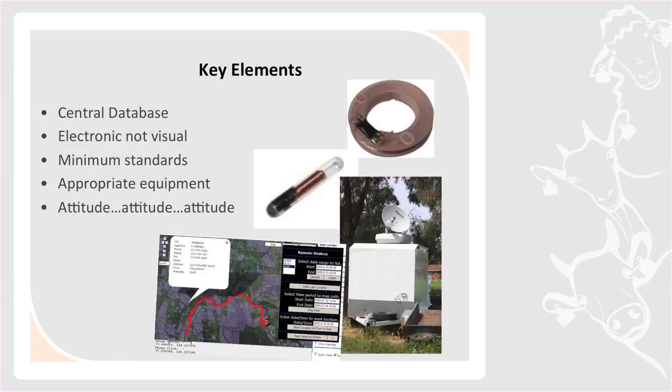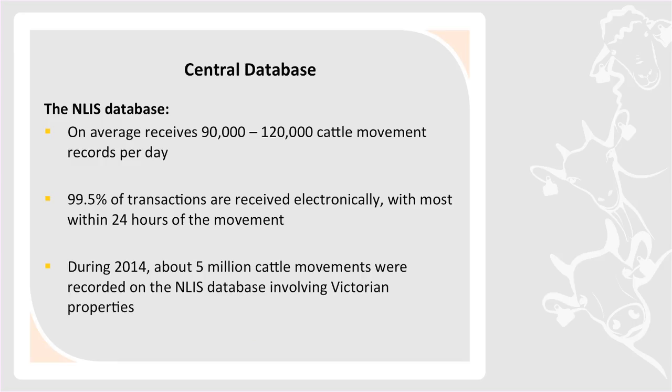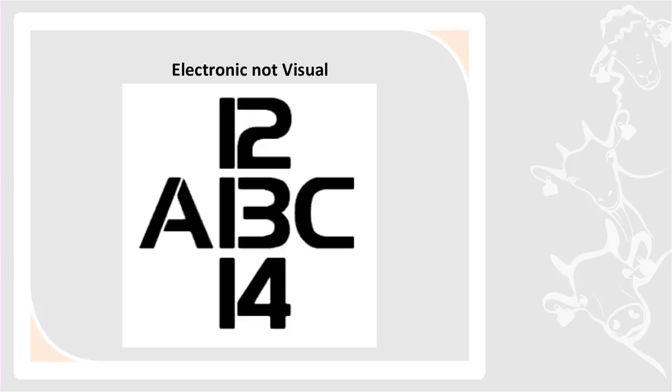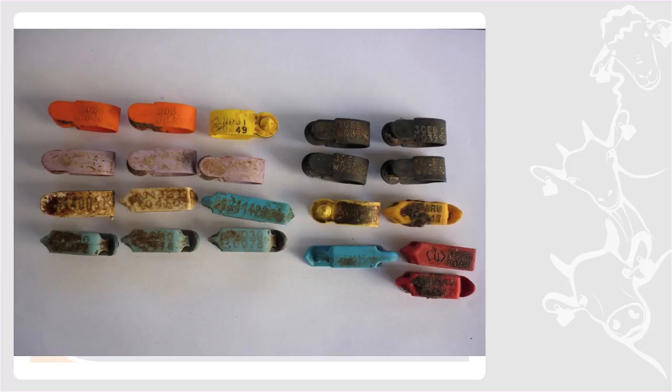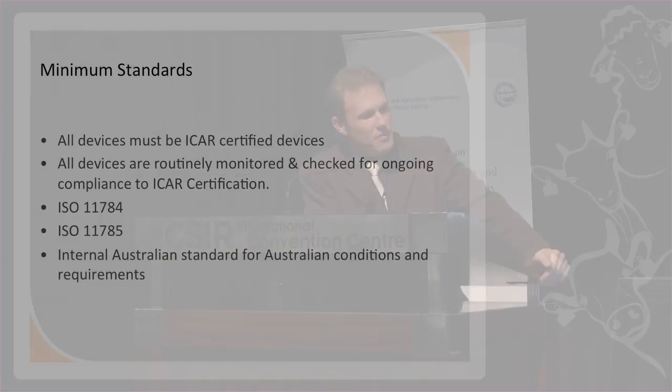What makes a good identification system? We absolutely need a central database. On average we do 120,000 cattle movements a day and 99.5% of these are electronic — not visual. It's a proven fact that 20% of visual transcriptions will be inaccurate. Here's an example of visual tags collected at an abattoir — if you can read them you're better than I am. That abattoir is killing sheep one every 3 to 4 seconds — reading a tag that fast is not realistic.